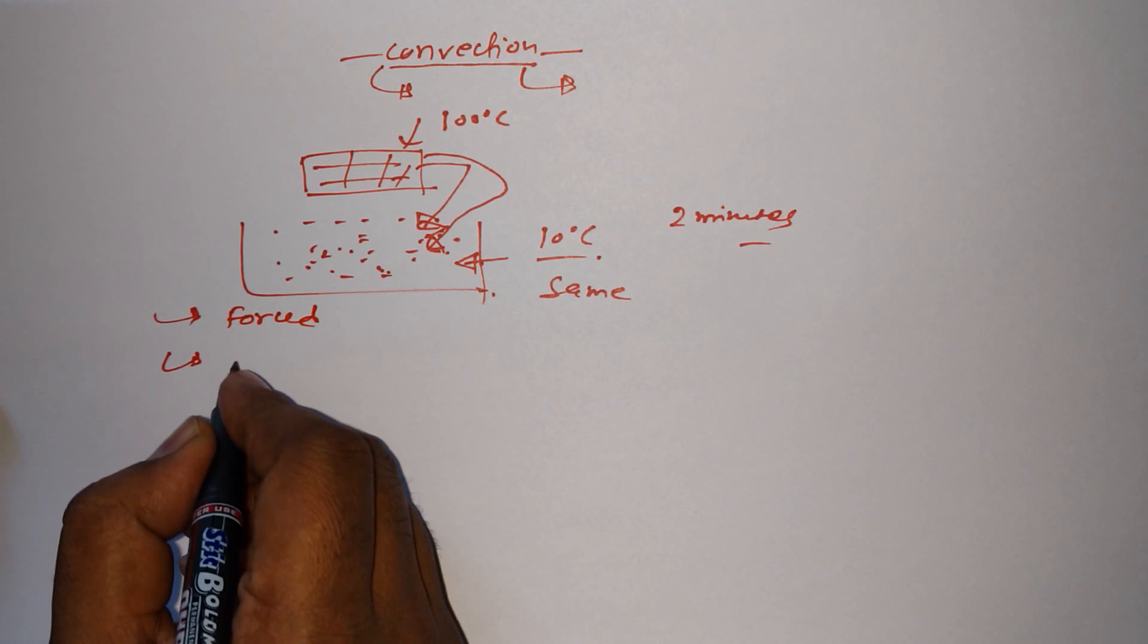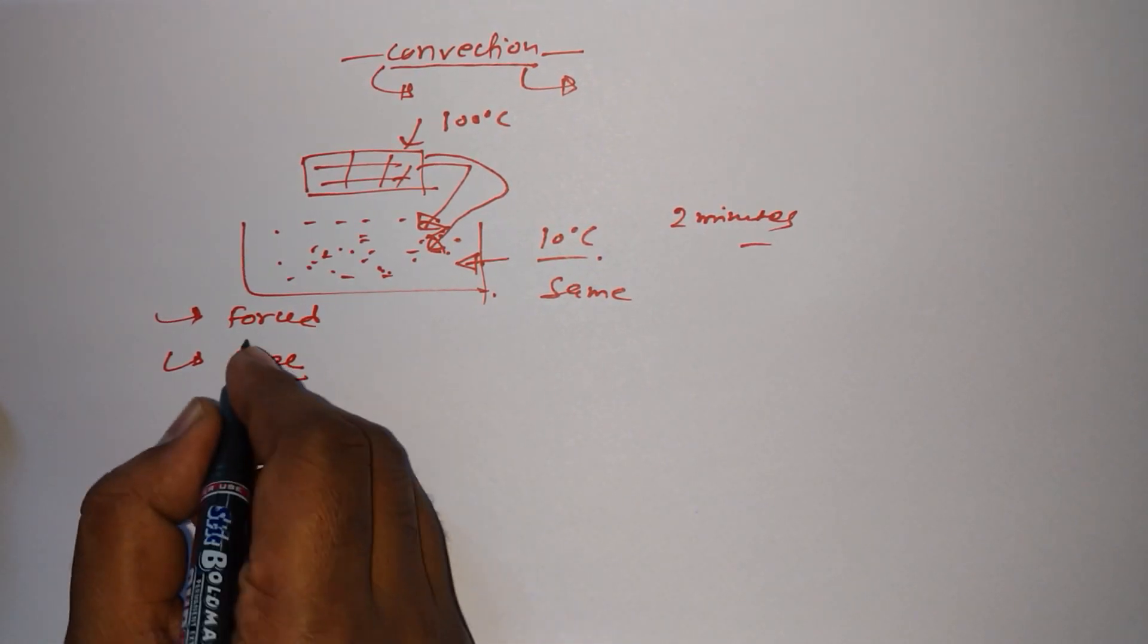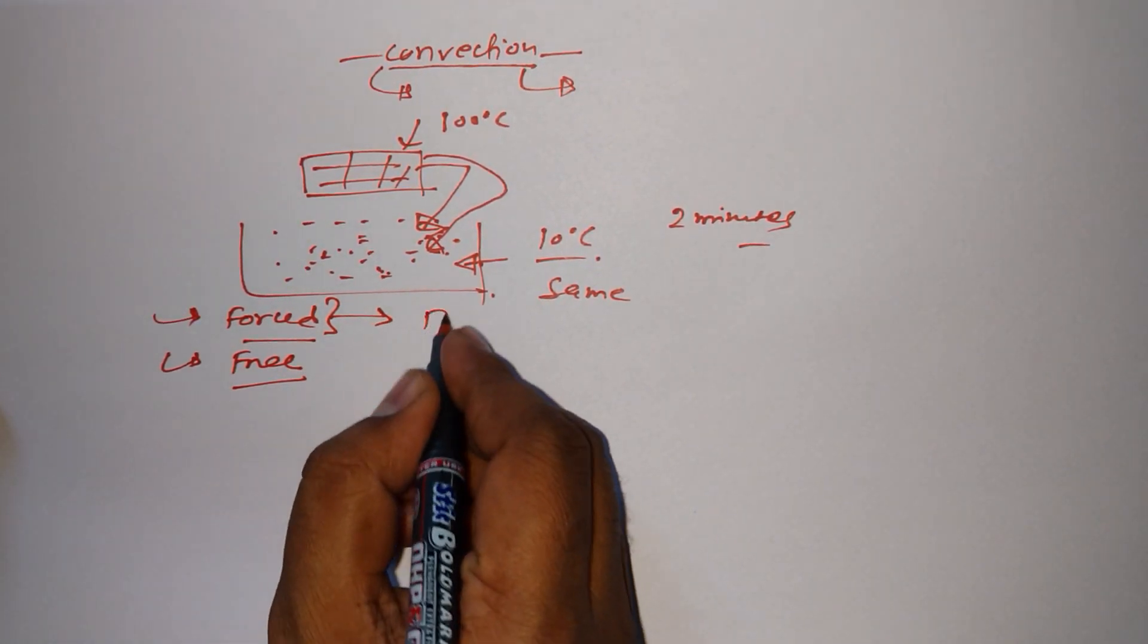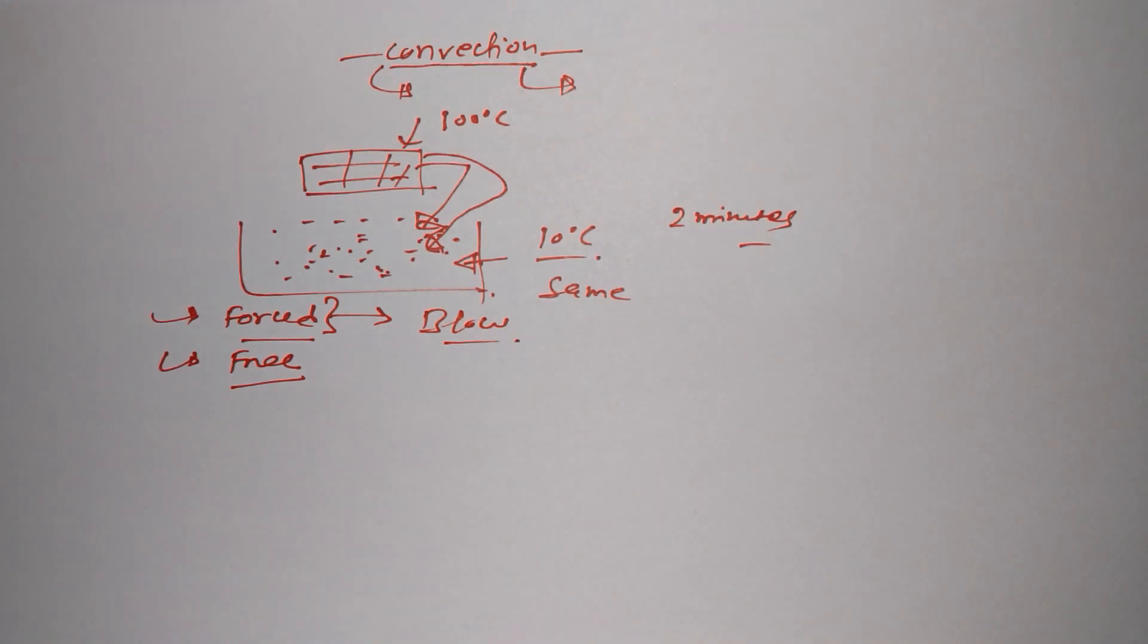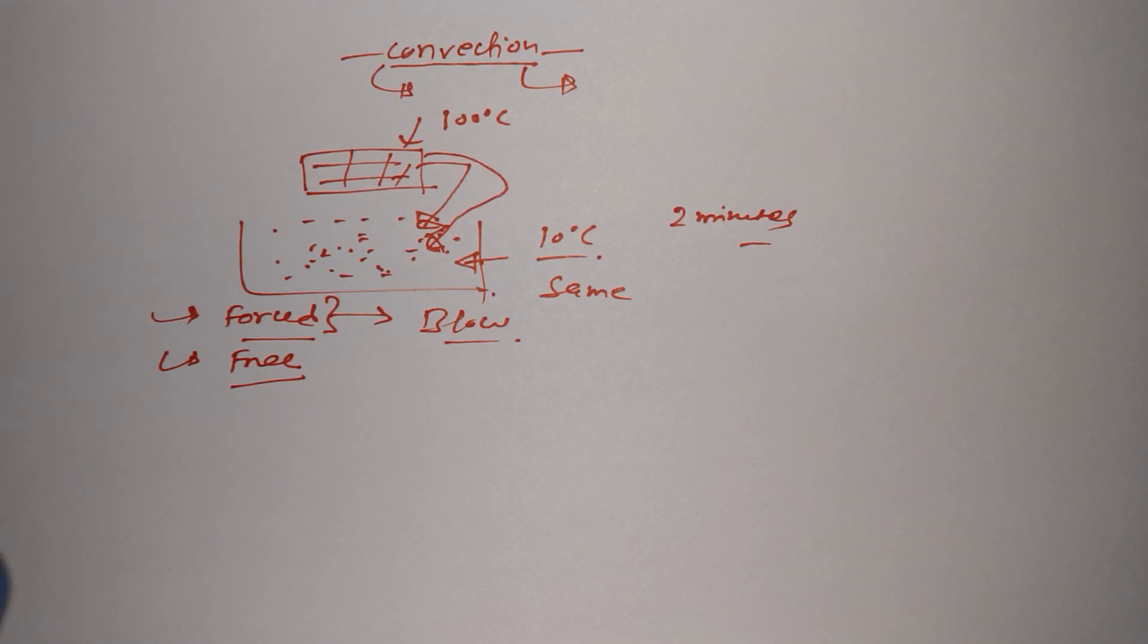And one is free convection. In case of forced convection, we use any external body for increasing the process of convection. I mean for increasing rate of transfer of heat from one body.